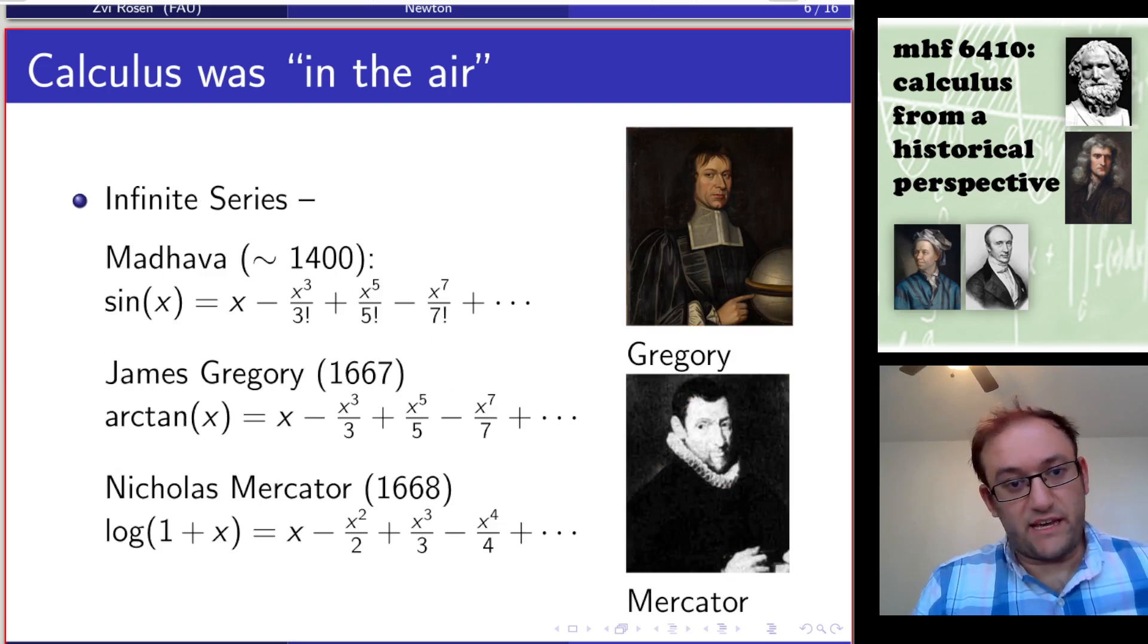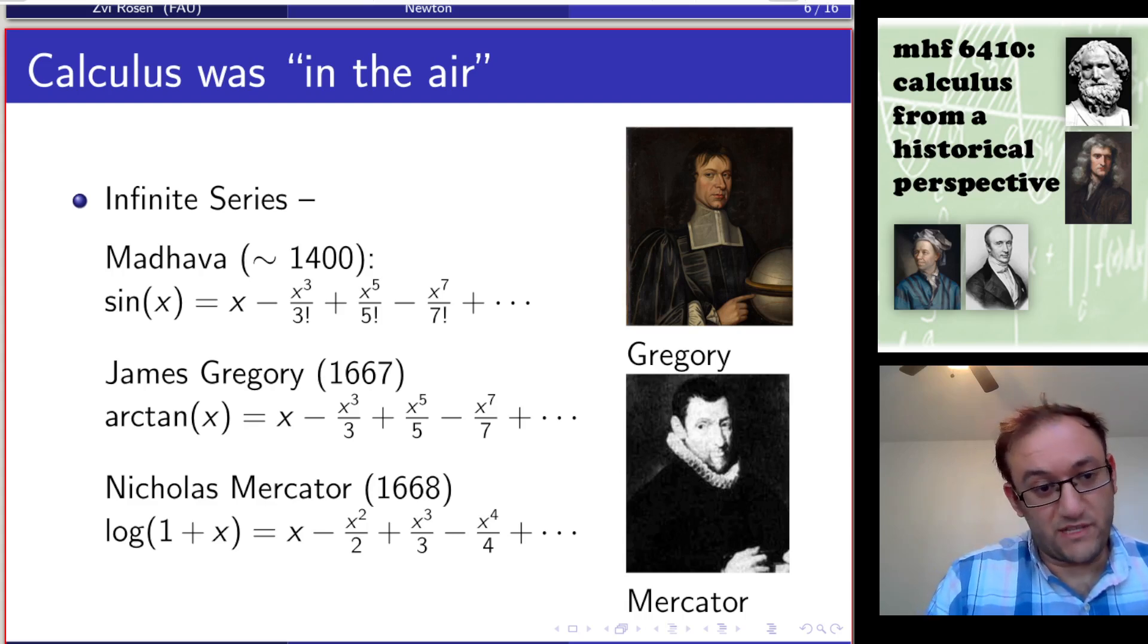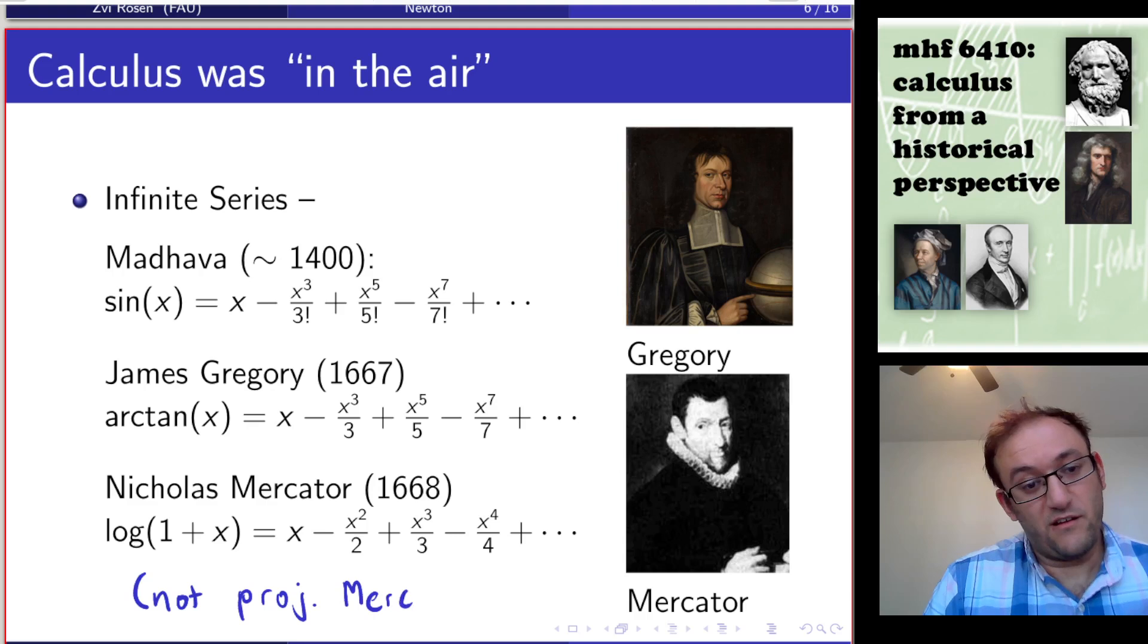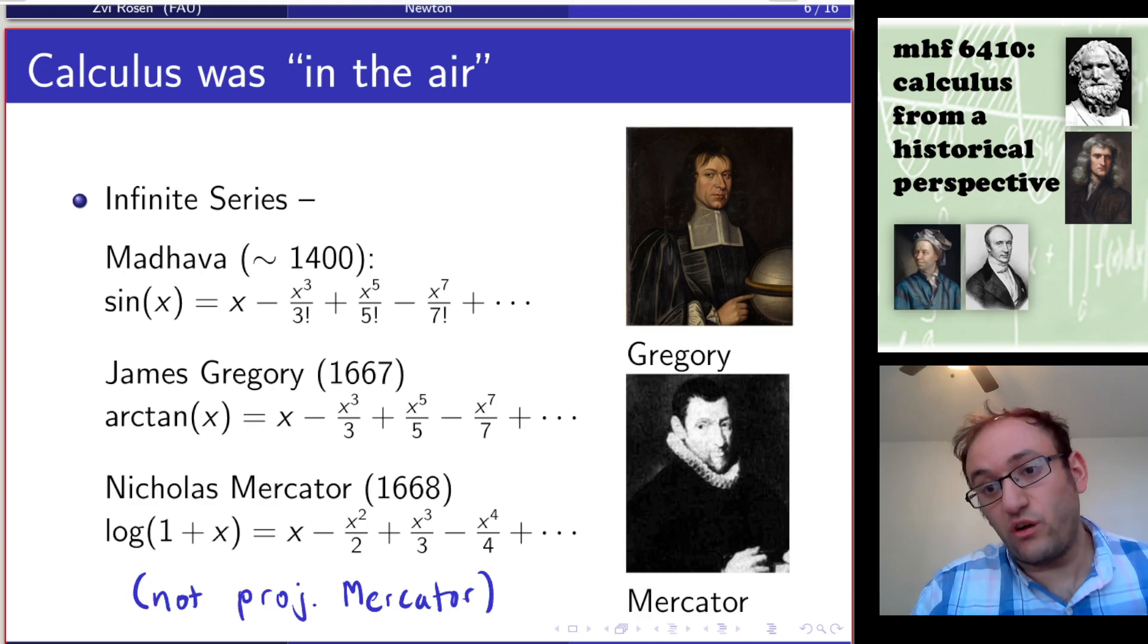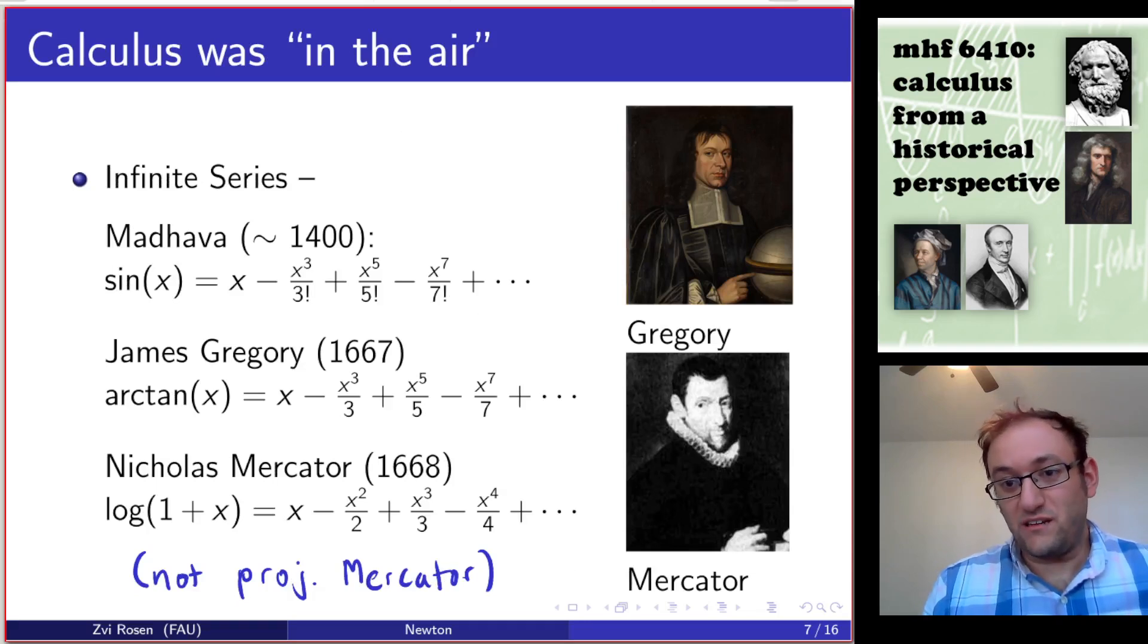And finally, infinite series. We saw infinite series had been used for a while. We saw how Madhava derived the series for sine. James Gregory, the Scottish mathematician, came up with a series expression for arctan. And Nicholas Mercator came up with a series expression for log 1 plus x. You have mathematicians already producing infinite series that encoded functions, rational or transcendental functions. So as we can see, calculus was in the air. There was all of this stuff that people had already done that we think of as calculus.